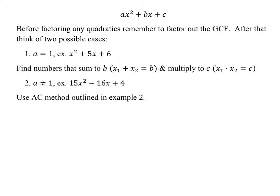Let's look at the first case. Our goal, when factoring something like this, is to come up with two factors such that the sum of them adds to B — so there's five here — and the product of them gives you C, whatever six is. Think about this for a second. Let's look at this example as our first one, because this is a very easy example.